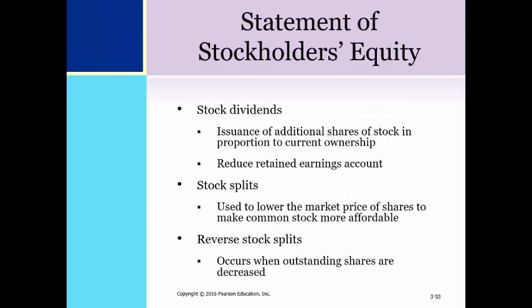Some companies have stock dividends, stock splits, or reverse stock splits during an accounting period. With stock dividends, the company issues to existing shareholders additional shares of stock in proportion to current ownership; stock dividends reduce the retained earnings account. Stock splits also result in the issuance of additional shares in proportion to current ownership and are generally used to lower the market price of a firm's shares to make the common stock more affordable for the average investor. Reverse stock splits are the opposite of a stock split and occur when a company decreases rather than increases its outstanding shares, usually when a company is struggling financially. Neither stock splits nor reverse stock splits affect retained earnings.